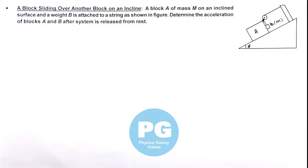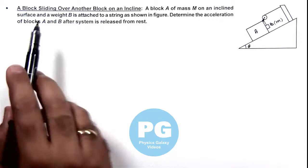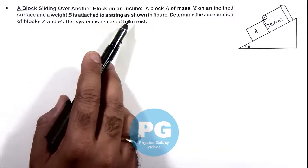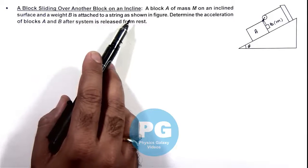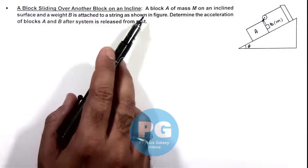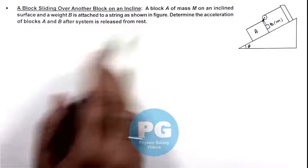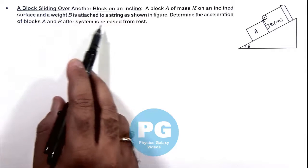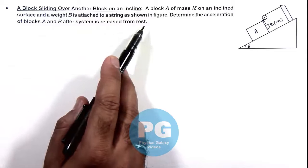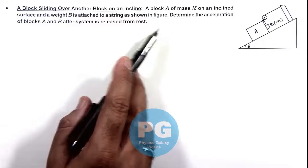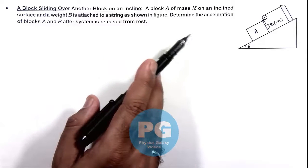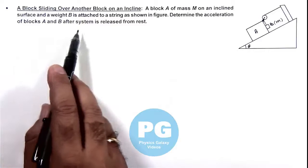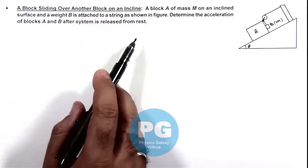This illustration describes a block sliding over another block on an incline. We are given that block A of mass M is on an incline surface and a weight B is attached to a string as shown in the figure. We are required to determine the acceleration of blocks A and B after the system is released from rest.